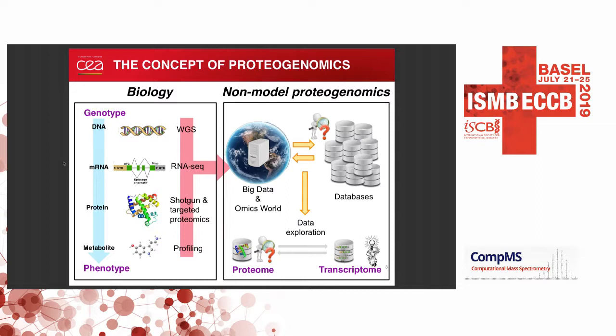For proteomics, the first thing we need is a database to interpret proteome data. For our species, nobody has worked on that, so we don't have any genomes. Therefore, we have to make transcriptomes, translate them, and use that to interpret mass spectrometry data.